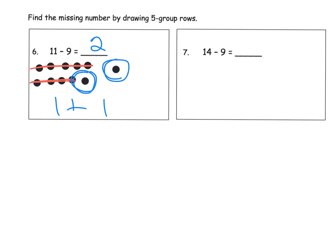Over here, again, we're subtracting by 9. So we are going to model our 14. 1, 2, 3, 4, 5, 6, 7, 8, 9, 10. 1, 2, 3, 4. So there is our 14. And we are going to cross off our 9, leaving us with 1 more in the 10 frame plus the original 4, which is 5.